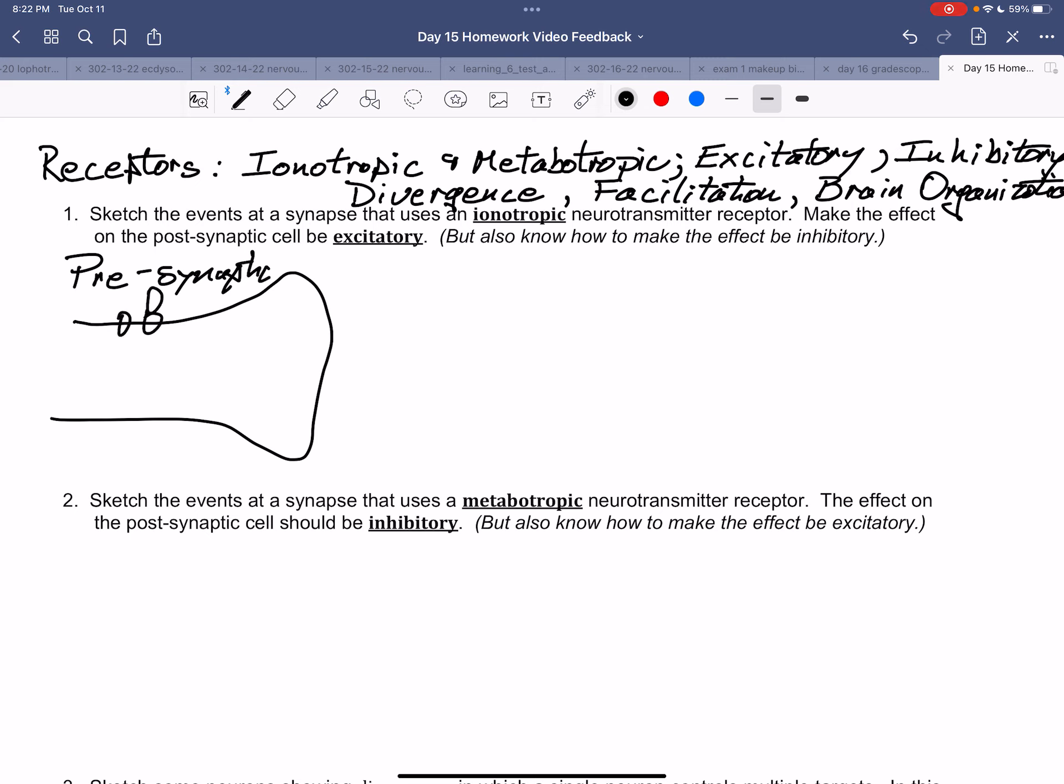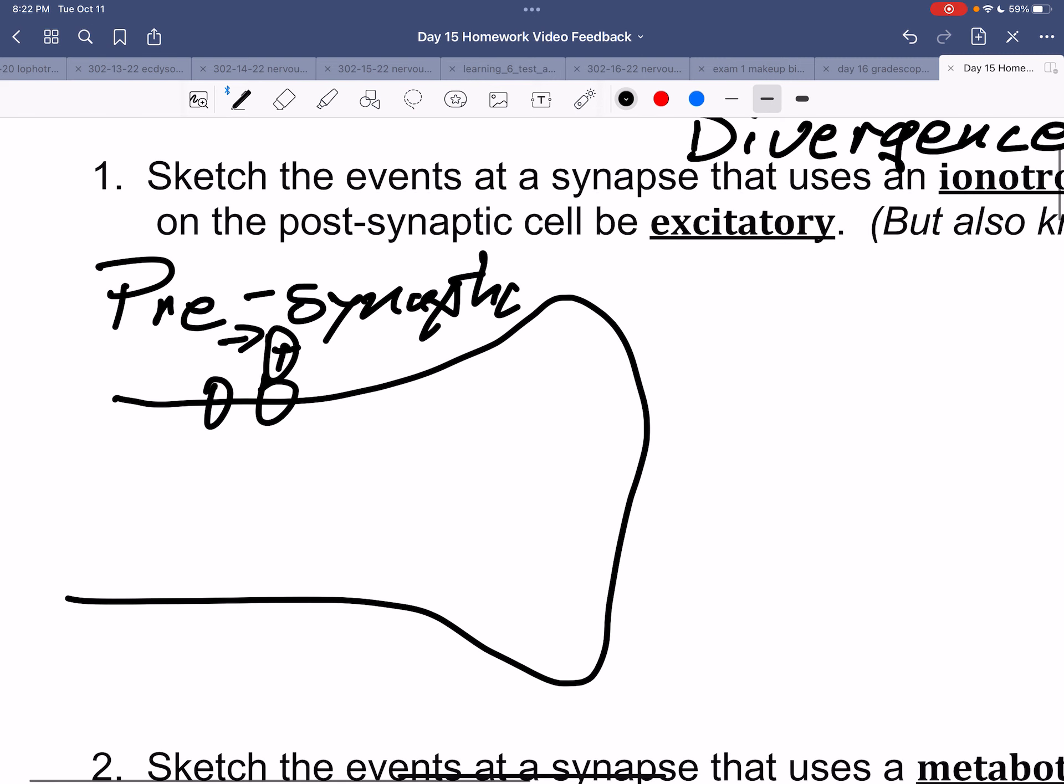As the action potential is occurring, we're opening voltage-gated sodium channels here. So the action potential is reaching the end of the axon, the axon terminal. Positive charge comes in, repelling nearby positive charge. That opens voltage-gated calcium channels.